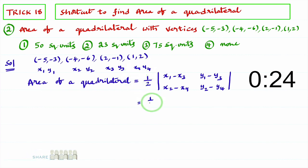Now substitute in this formula. Half into. You observe first point and third point. x1 minus x3, minus 5 minus 2, that is minus 7. y1 minus y3, minus 3 minus of minus 1, that is minus 2.